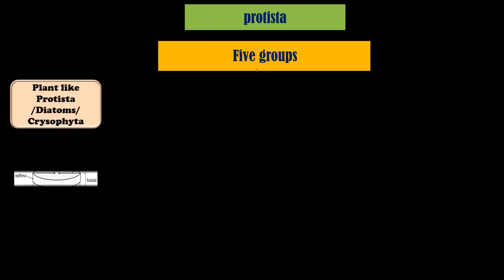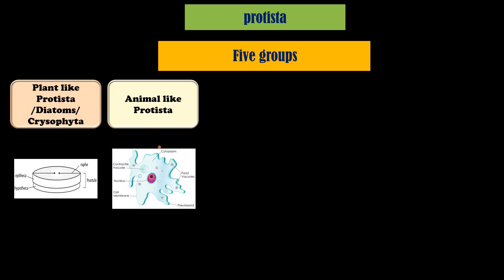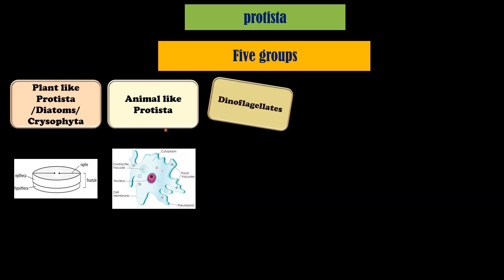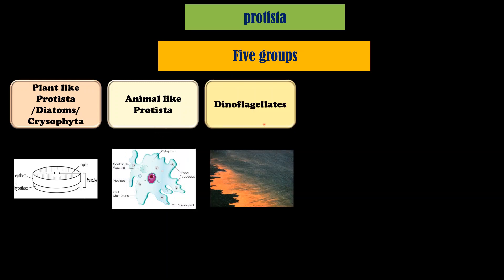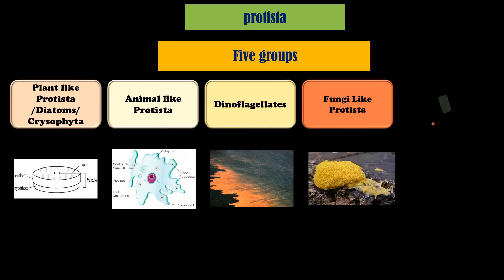This group is further divided into 5 subgroups: plant-like Protista which are also called diatoms, animal-like Protista, dinoflagellates, fungi-like Protista and euglenoids.